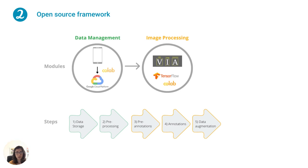In step four, the manual annotation of images, we use the open source software VIA, although there is a variety of open source tools available for this task. Step five, data augmentation, involves creating multiple copies of the same images but with transformations.